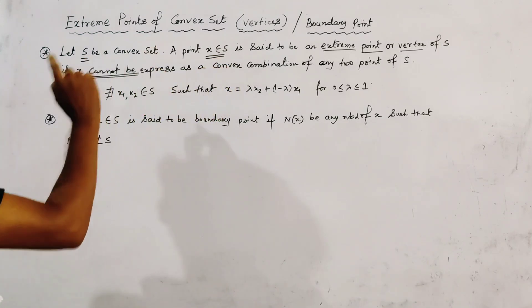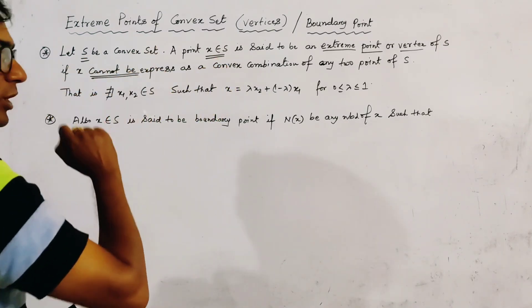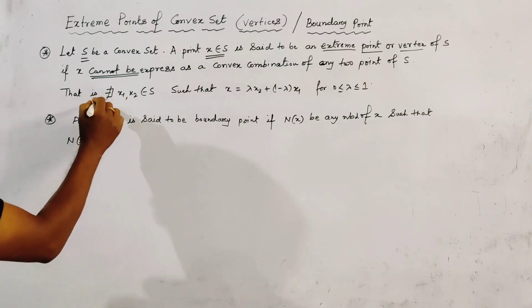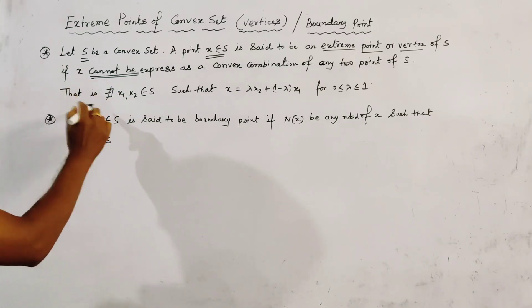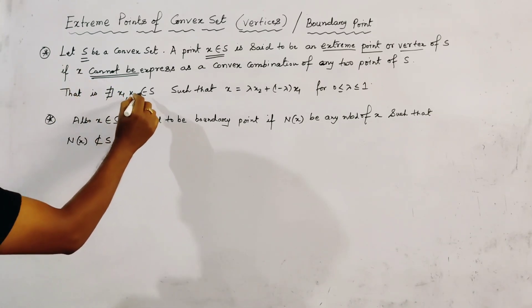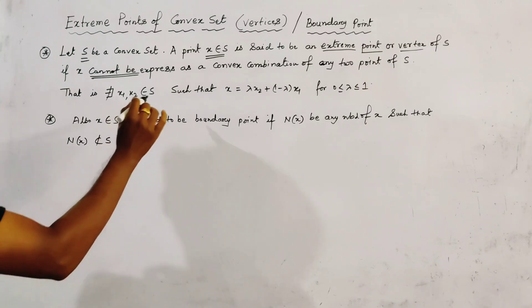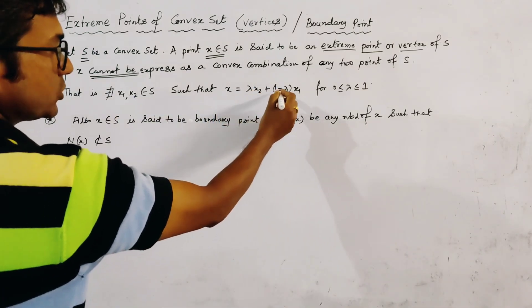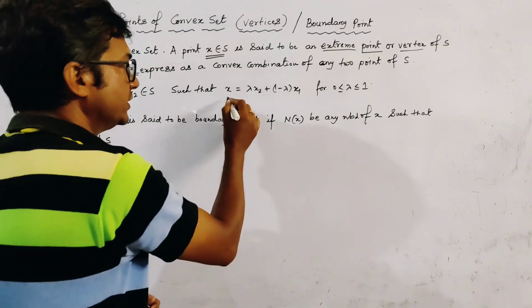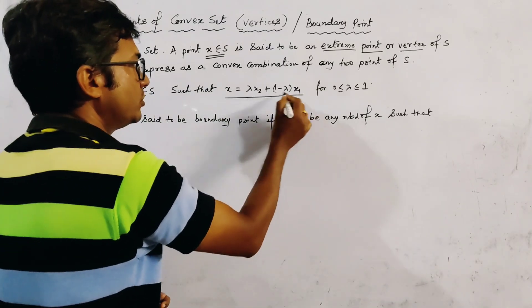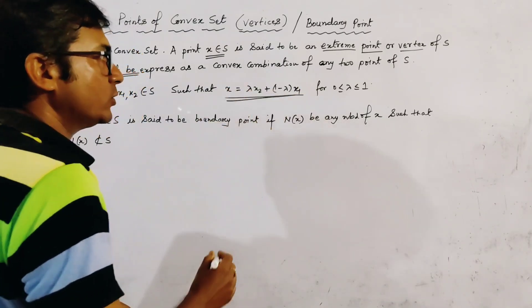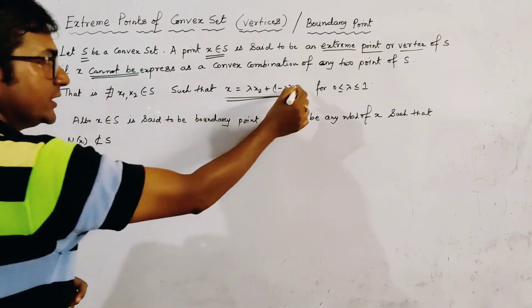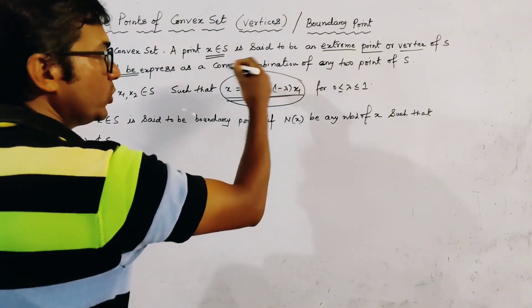If X cannot be expressed as the convex combination of any two points of S, then X is said to be an extreme point. That is, there does not exist two points X1, X2 belonging to S such that X equals lambda*X2 plus (1 minus lambda)*X1. This is the convex combination of X1 and X2.